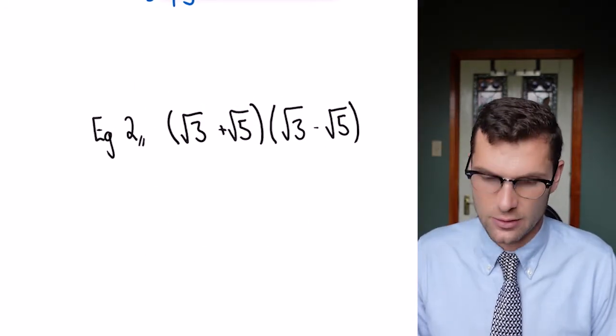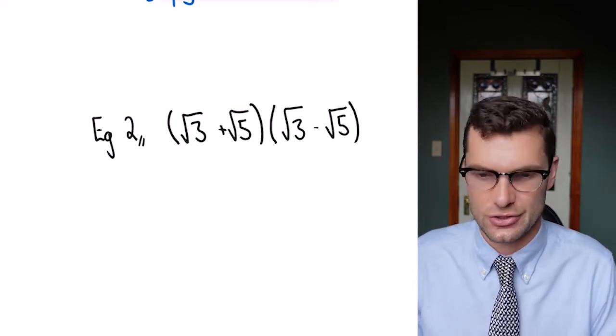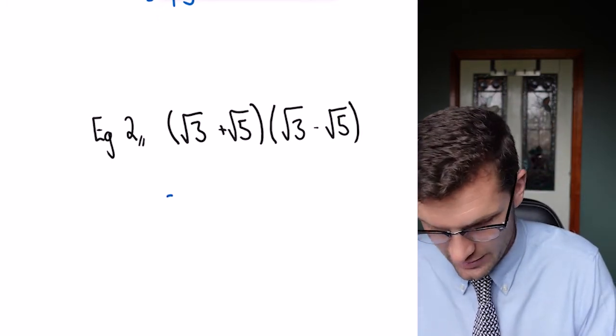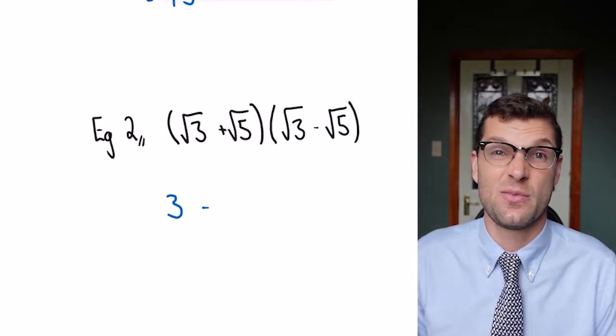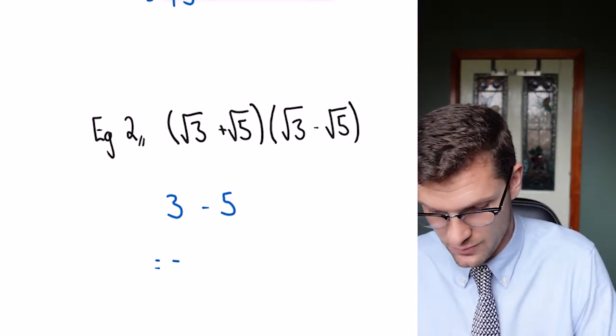For this one here, even though they're both surds, the overall process doesn't change. The first term squared is √3² which is just 3, minus the second term squared which is 5. So the answer for this one is just minus 2.